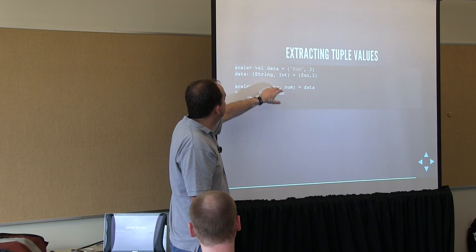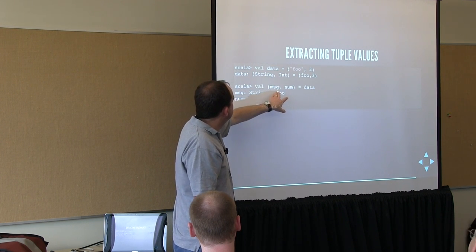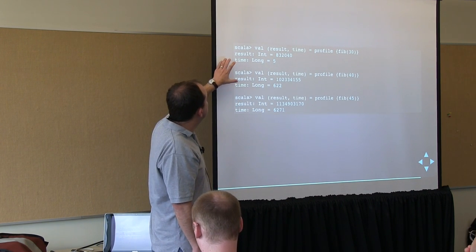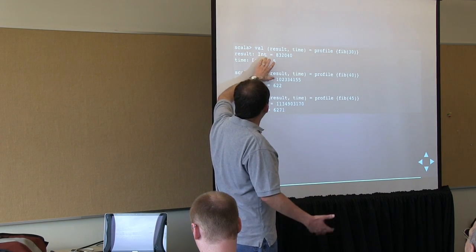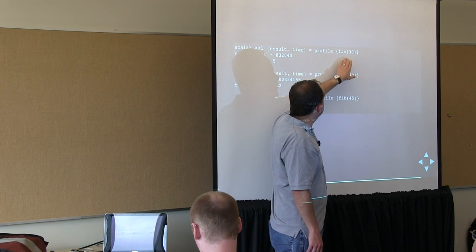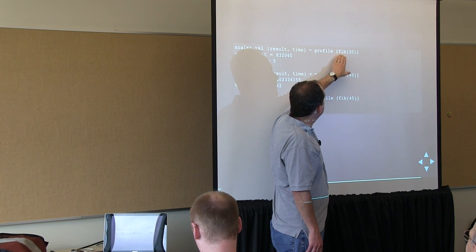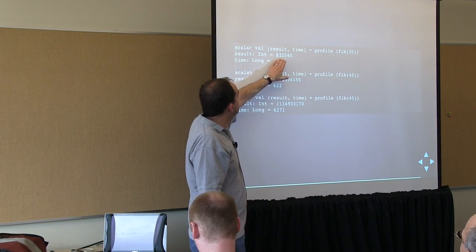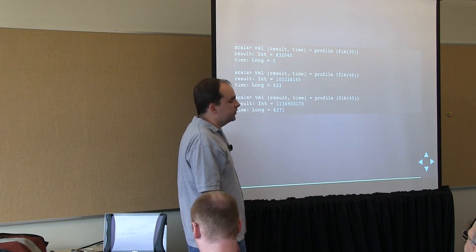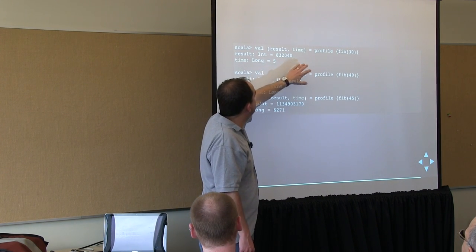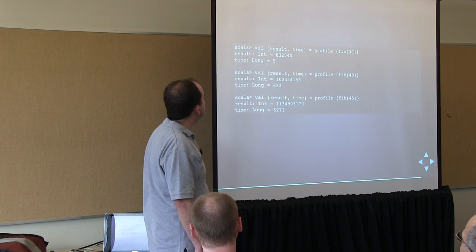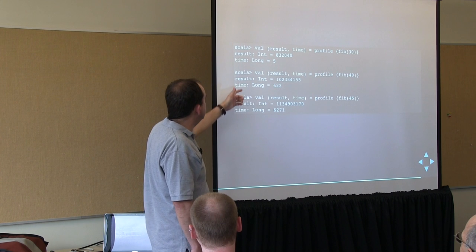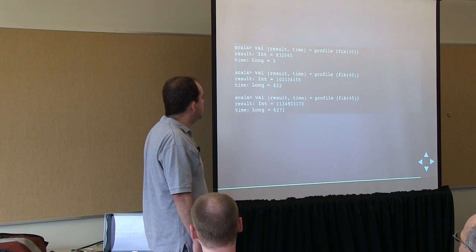Tuple values can be extracted by providing arguments inside a tuple syntax. Now that I have the profile function defined, I call profile and pass it a function — my fib function with the value 30 passed to it — and the result is the Fibonacci number and the number of milliseconds it took. Extracting the two tuple elements, trying fib(40) takes 622 milliseconds, and fib(45) is now taking 6.2 seconds — a noticeable amount of time.